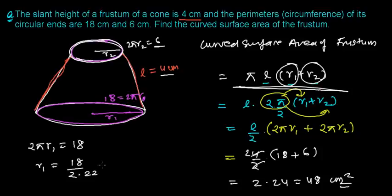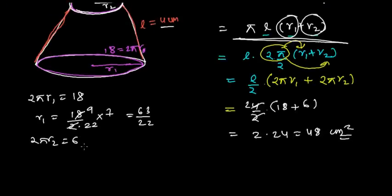π is actually 22 over 7, so 7 will be up, so 2 times 9, 9 into 7, that is 63 over 22. And similarly, you can write 2πr2 equals to 6, and then you can finally develop r2 as 6 over 2 and π, that is 22 into 7. And this is 2 times 3, that's going to be 21 over 22.